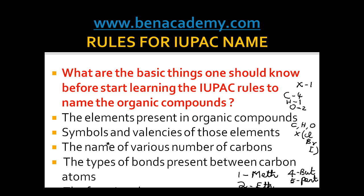The next thing to know is the types of bonds present between carbon atoms. There are 3 types of bonds that can exist between any two carbon atoms: a single bond, a double bond, or a triple bond.